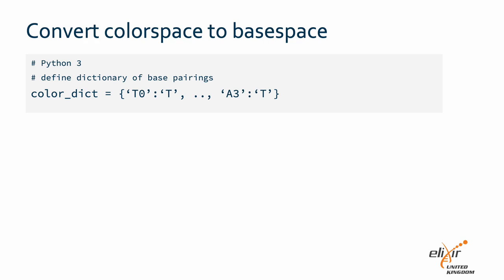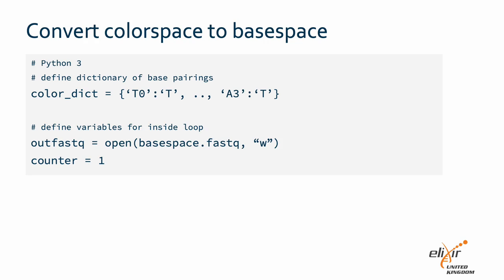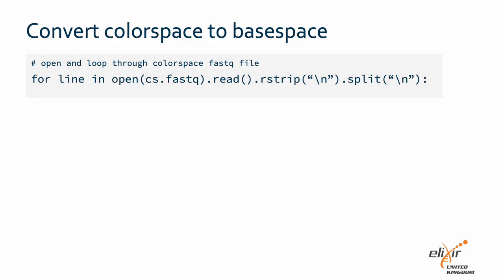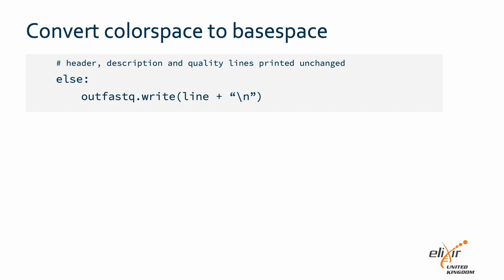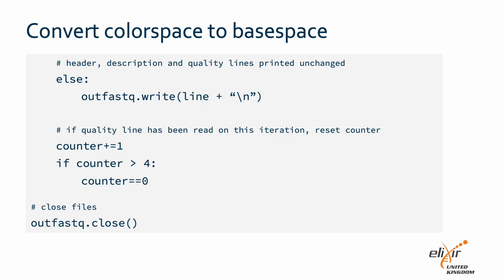Here, in a worked Python example, you create a dictionary of all the possible base-number pairings and what base that would correspond to. Create an output file and set a line counter for within each read. Open your FASTQ file and iterate through each line. For the color space values in each read, capture the starting base and then loop through the sequence using the dictionary of possible context pairs, and write to file. All other FASTQ lines can be left unchanged. Continue the loop by incrementing the counter and eventually closing your output file.